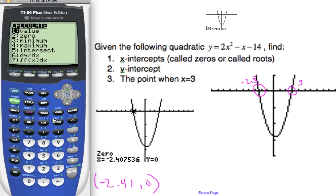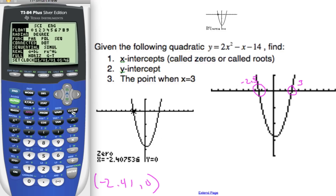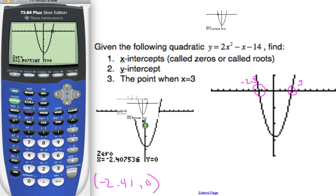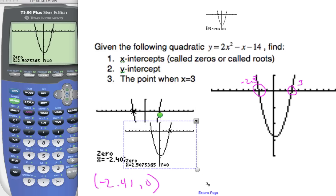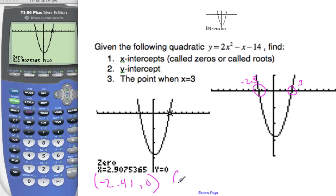Do the same again — second trace, zero. For the left bound, you're going to want to put in the middle again because you're looking at the one on the right, so use 0. And for the right bound, you'd want to choose something greater than 3, so 4. My guess was 3. And my other zero is 2.907536, so I get 2.91 to three significant figures. I just use my tick values — I set them as 1s so I can just count.